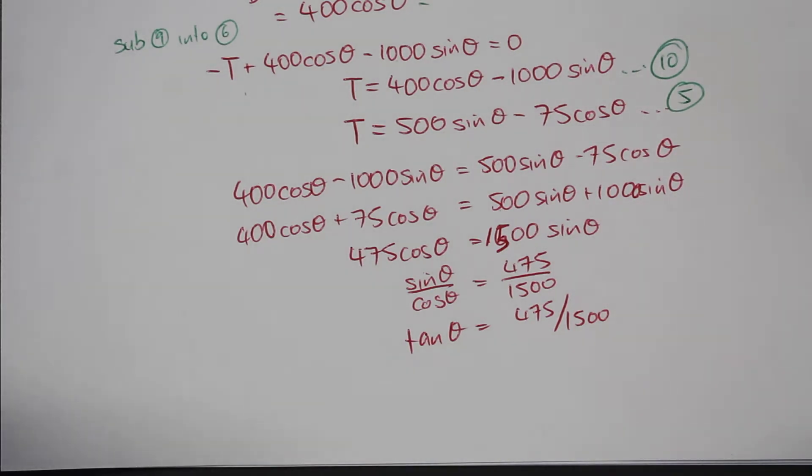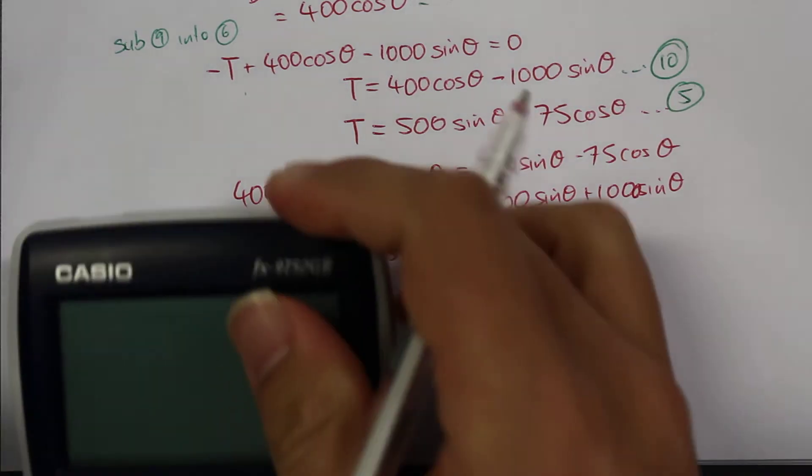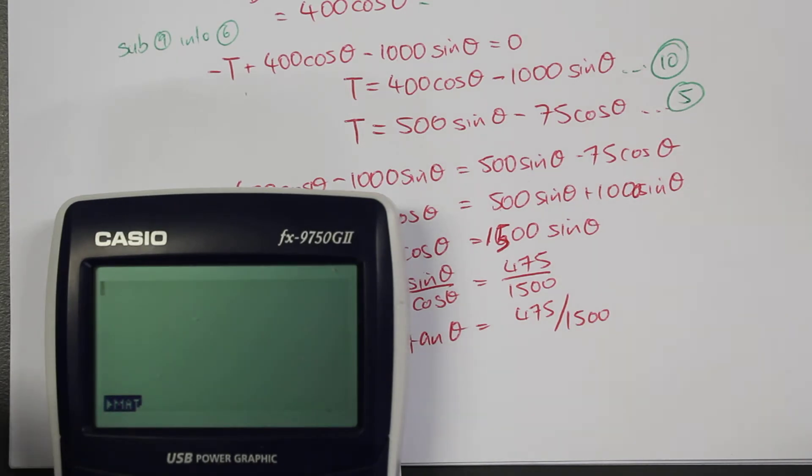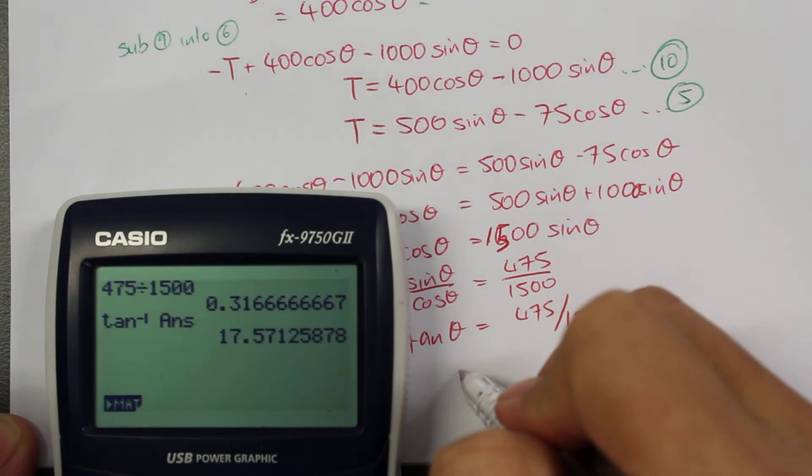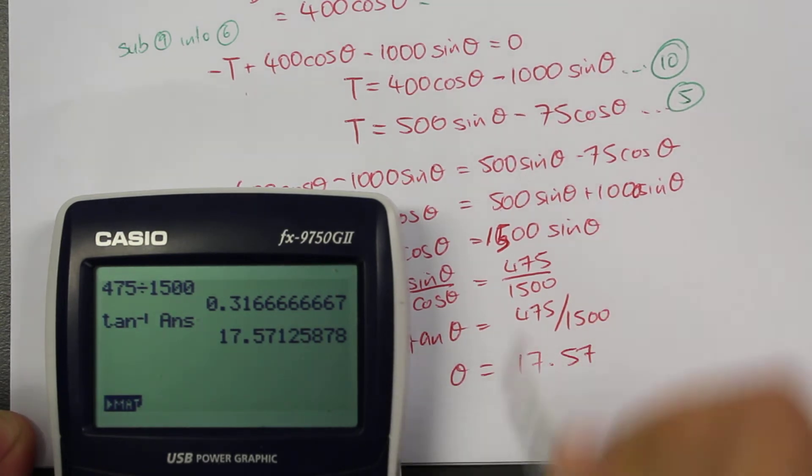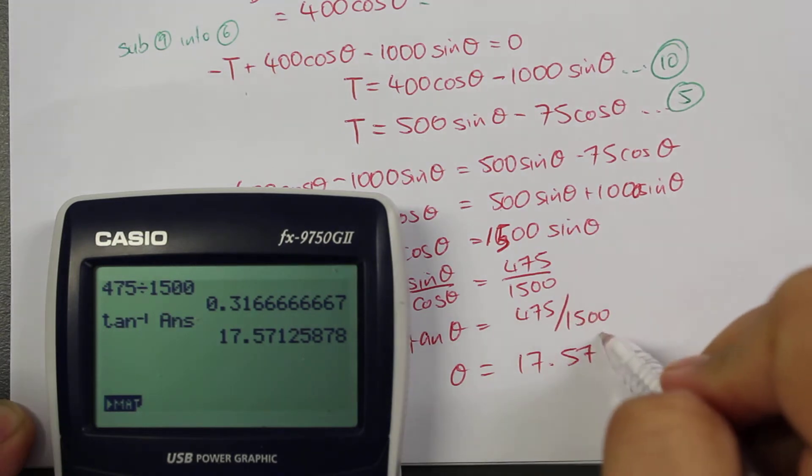So now we can calculate the angle theta just by using inverse tan. Here we get 475 divided by 1500, and inverse tan of that number. So now that we've calculated the angle theta, we could substitute this angle back into the equation for T.